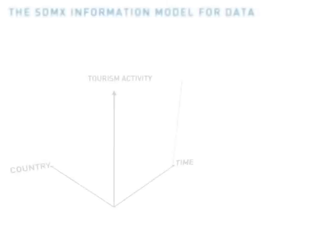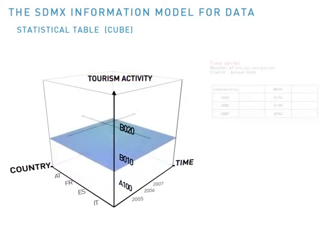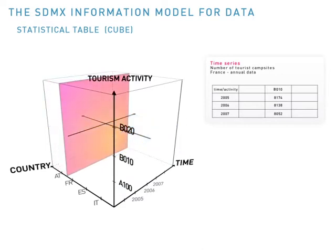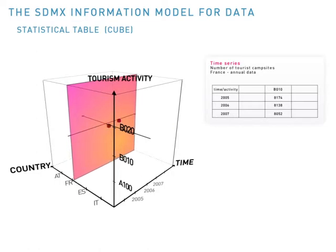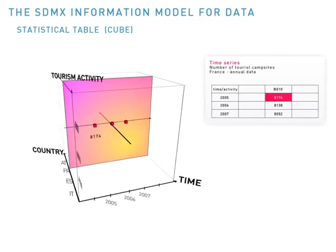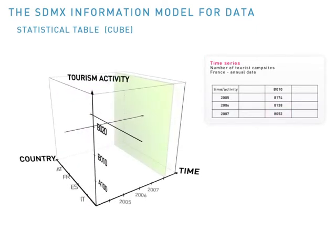We illustrate how this table can be represented as a statistical table. The statistical table in our example has three dimensions: country, time, and tourism activity. Let's consider only one — tourism activity B010. If we fix the country, in this case France, we obtain one time series with a value for each given time period, in this case for each year.